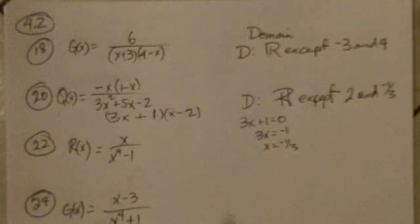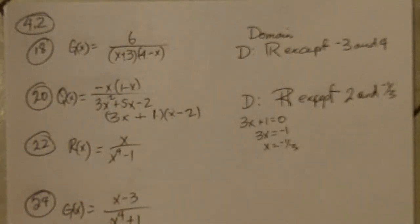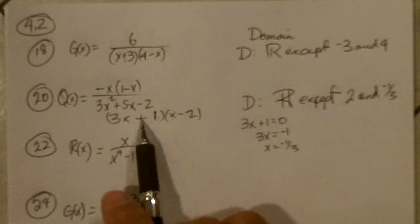So it's all reals for the domain except 2 and negative 1 third. You could also have just typed that into the calculator, seen the graph, and it will cross at 1 third and at 2, or negative 0.3333 and 2.